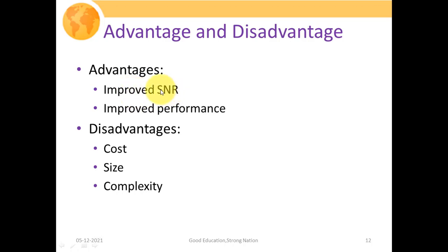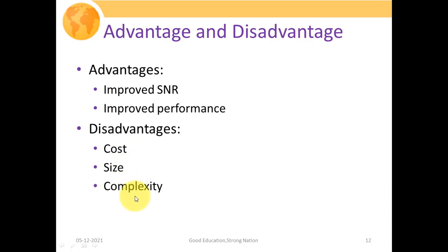The advantages of the rake receiver include improved SNR, since we use a weighted sum taking the contribution of all multipath components. Higher SNR leads to better performance and lower bit error rate. The disadvantages are increased cost, size, and complexity: using multiple correlators increases cost and physical size, and the circuitry required to detect a single signal using many components adds significant complexity to the receiver.